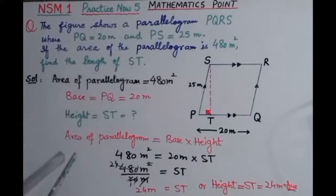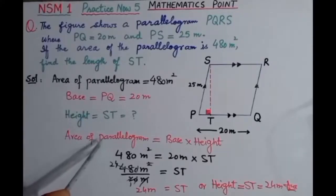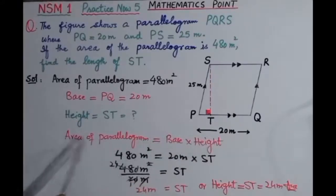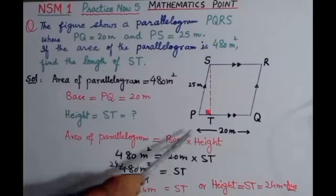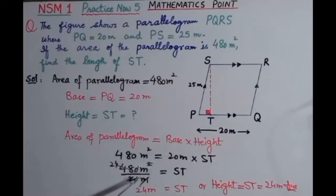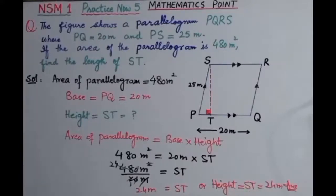In this practice question, we used the formula: Area of parallelogram = base × height. Area was given as 480 meter square, base was 20 meters, so dividing gives height ST equal to 24 meters. That is the required answer.